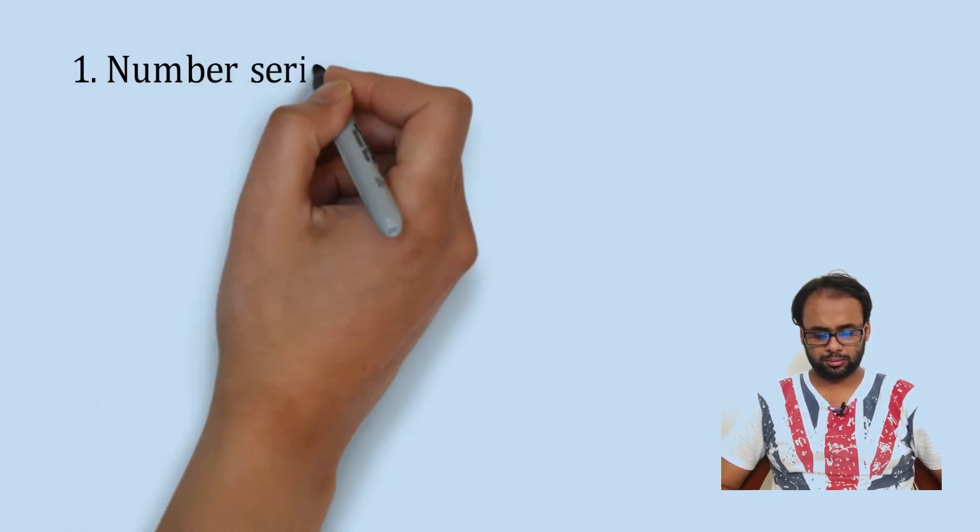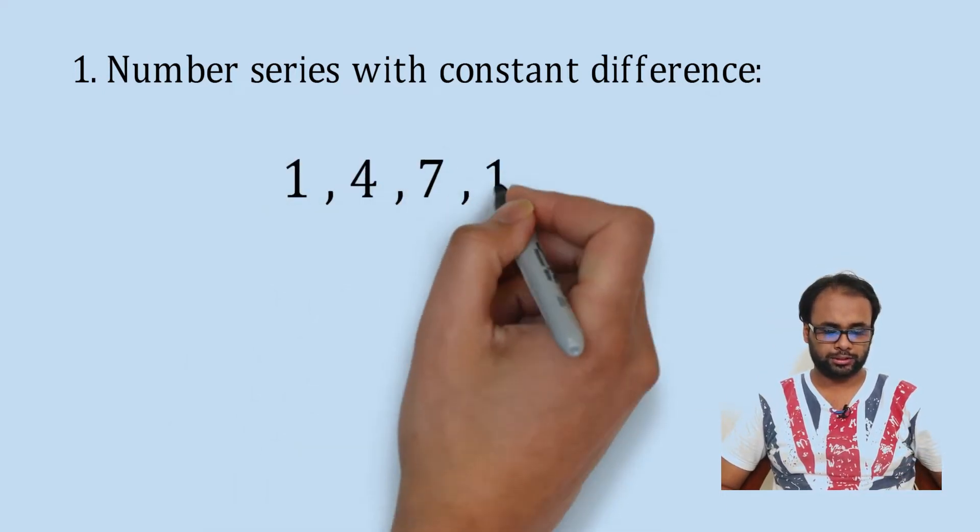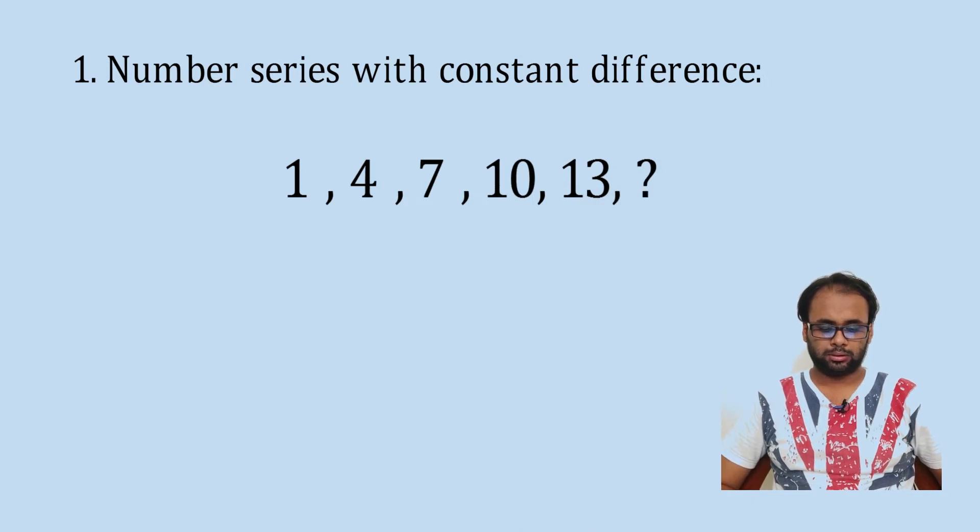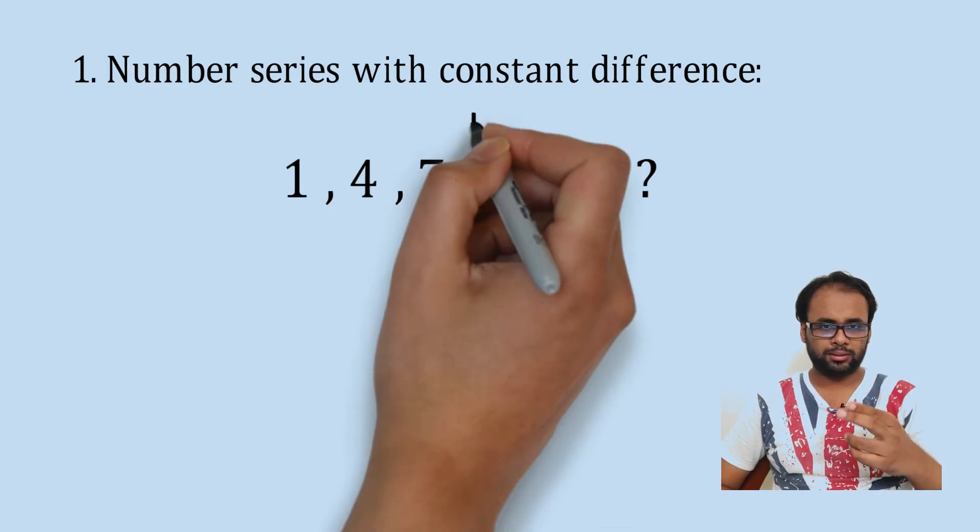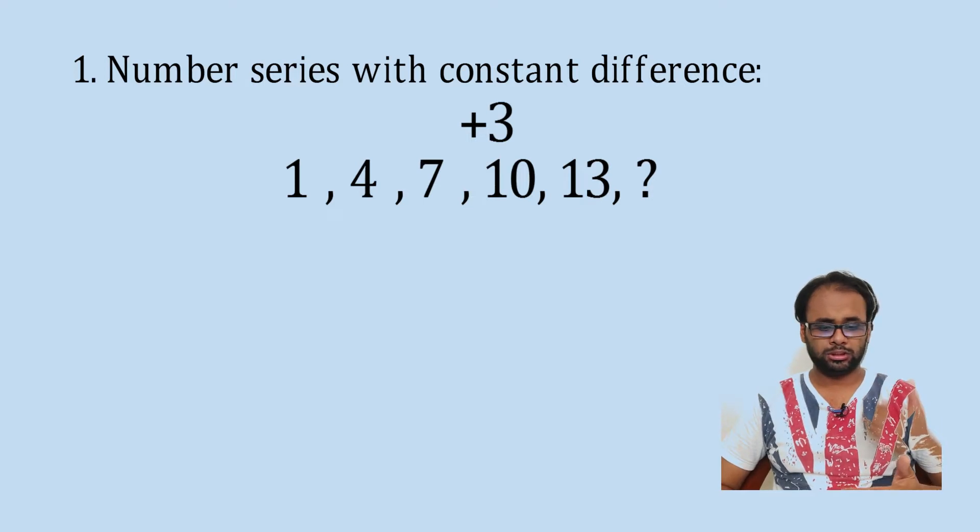The number series with constant difference. The first type is like a simple series: 1, 4, 7, 10, 13. Now clearly we can see there is a constant difference between the numbers which is 3.